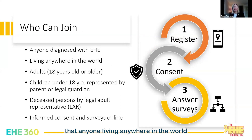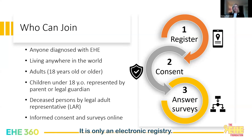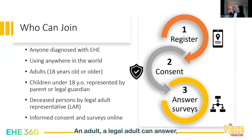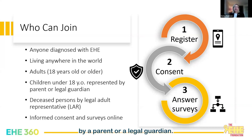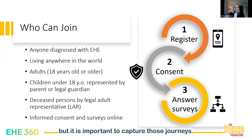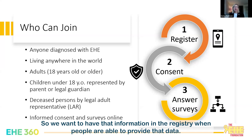Anyone living anywhere in the world who is diagnosed with EHE can join this registry. You do need access to the internet, as it is an entirely electronic registry with no paper forms. Adults who are 18 years or older can consent on behalf of themselves. In cases where an adult cannot answer due to poor health, another legal adult can register on their behalf. Children under 18 must be represented by a parent or legal guardian. We are also including deceased persons — a spouse or sibling can add that person to the registry to capture those journeys.